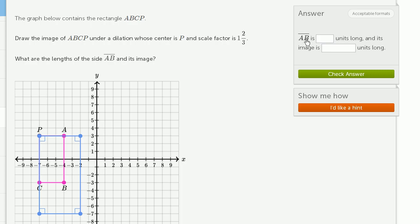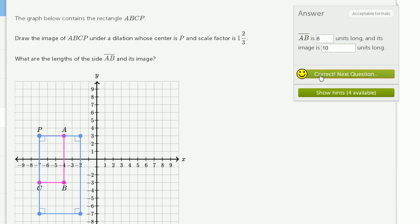So let's answer these questions. The length of segment AB, well, we already saw that. We're going from 3 to negative 3. That is 6 units long. And its image, well, it's 1 and 2/3 as long. We see it over here, we're going from 3 to negative 7. 3 minus negative 7 is 10. It is 10 units long. We got it right.